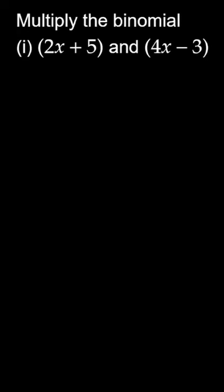Hi, the question says multiply the binomial 2x plus 5 with 4x minus 3. So let's write multiplication in between. And then how do we multiply binomials? We'll multiply 2x with both the terms plus 5 into both the terms.